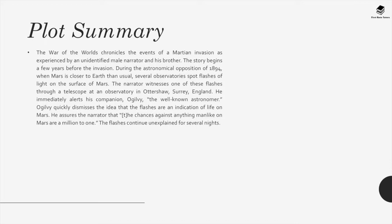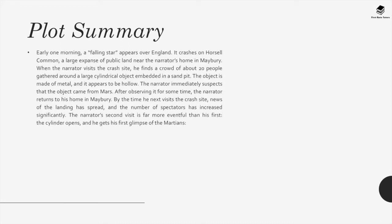The flashes continue unexplained for several nights. Early one morning, a falling star appears over England and crashes on Horshill Common, a large expansive public land near the narrator's home in Maybury. When the narrator visits the crash site, he finds a crowd of about twenty people gathered around a large cylindrical object embedded in a sand pit. The object is made of metal and appears to be hollow. The narrator immediately suspects that the object came from Mars. By his next visit, news of the landing has spread and the number of spectators has increased significantly. The narrator's second visit is far more eventful than his first.